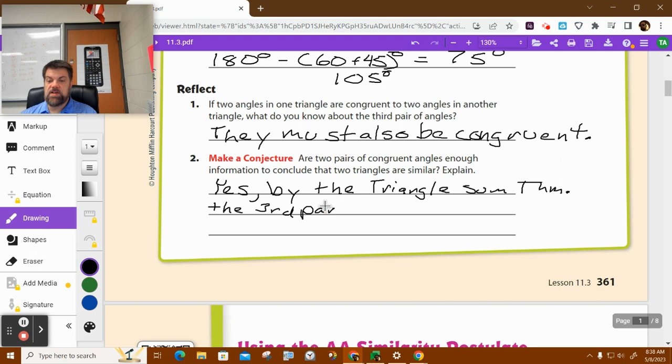The third pair, that means the third angle of both triangles, the third pair of angles must be what? Congruent, right? Must be congruent. So, that means all three of them are congruent. So, the triangles must be similar.